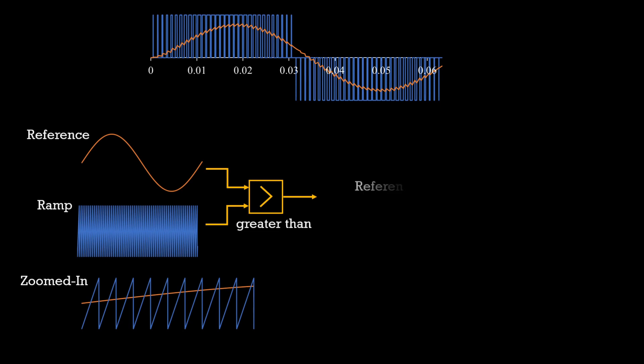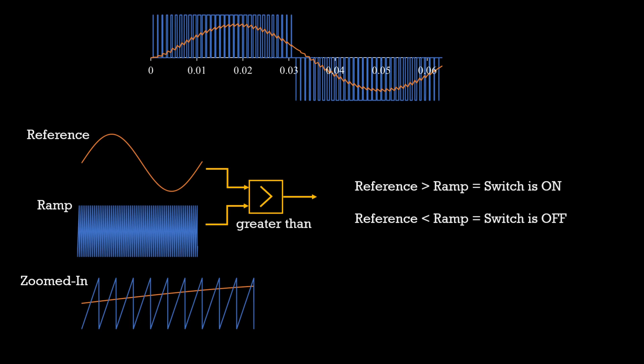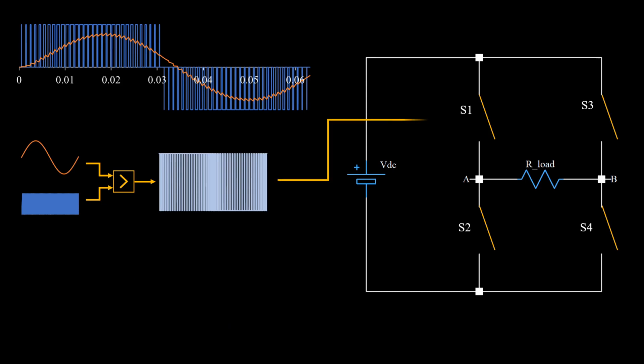And whenever the sine wave value is more than the ramp, we will keep the switch S1 on and when it is lower, we will keep S1 off. We can observe that the switching pattern somewhat looks like what we want but not exactly. But we will get what we want. We will send the signal to the S1 switch of the inverter and for switch S2, we will apply the complementary state by using a not gate.